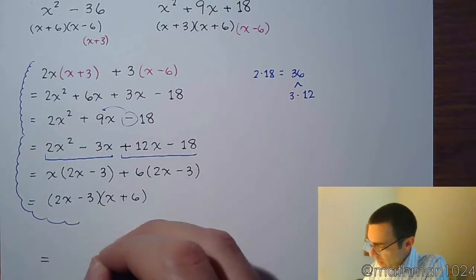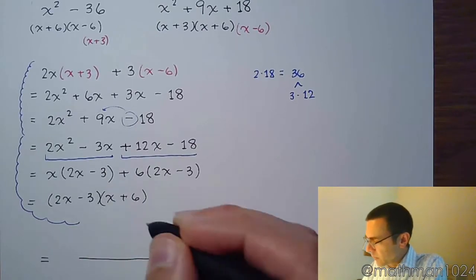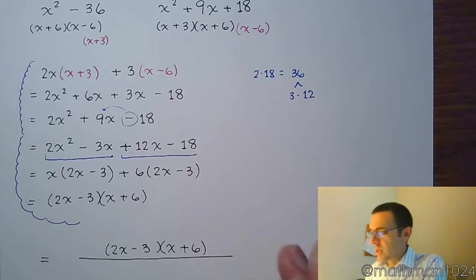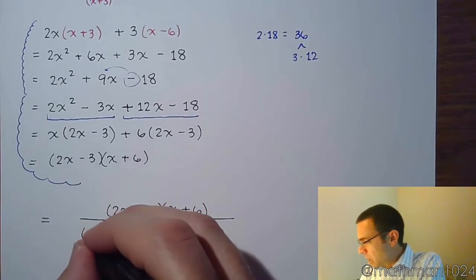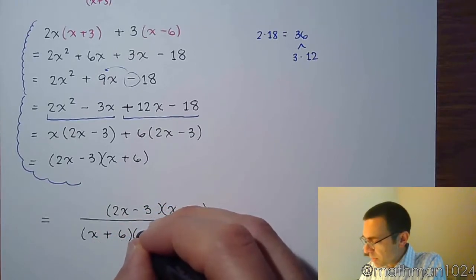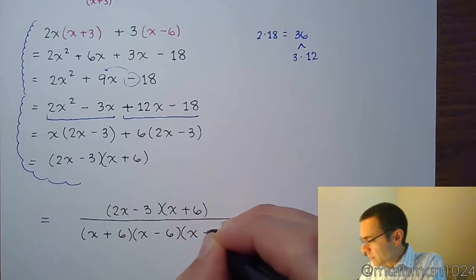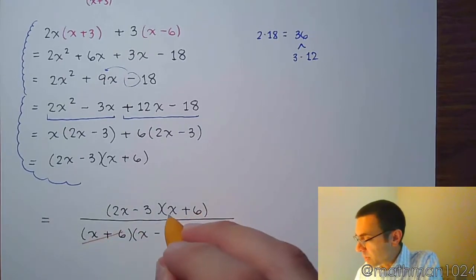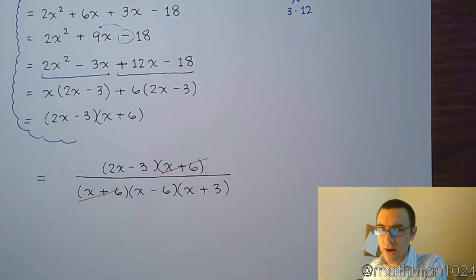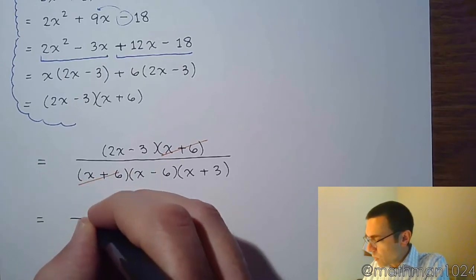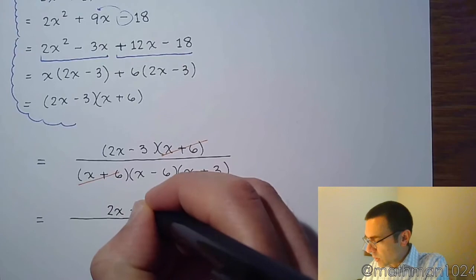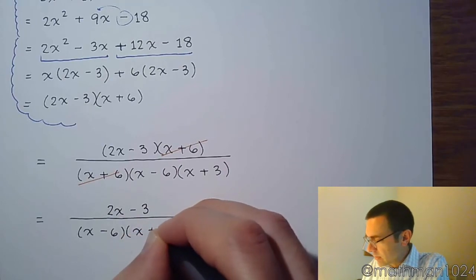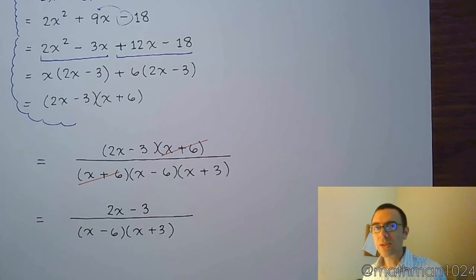Now let's put it all together. We've got one big fraction: in the numerator we have 2x minus 3 times x plus 6, over the common denominator x plus 6 times x minus 6 times x plus 3. We have a common factor of x plus 6 that cancels. So even though we combined the two fractions and found the common denominator, we still had more simplifying to do. Our final answer is 2x minus 3 over the product x minus 6 times x plus 3.